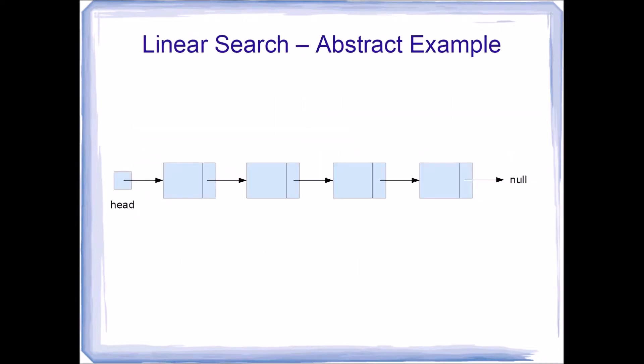Let's examine the linear search algorithm in the abstract. Here we have a four-node linked list. We'll assume the value we're searching for is X, and X is in the last node of the list.